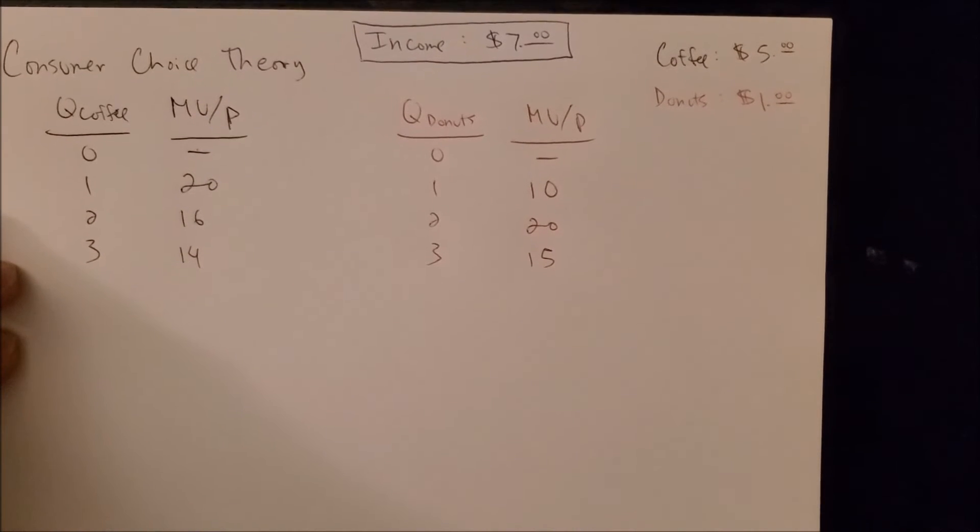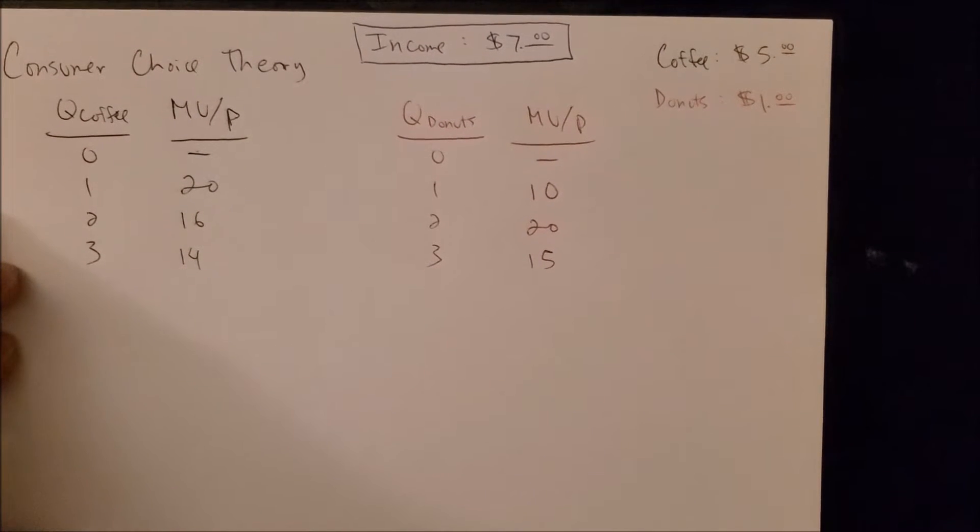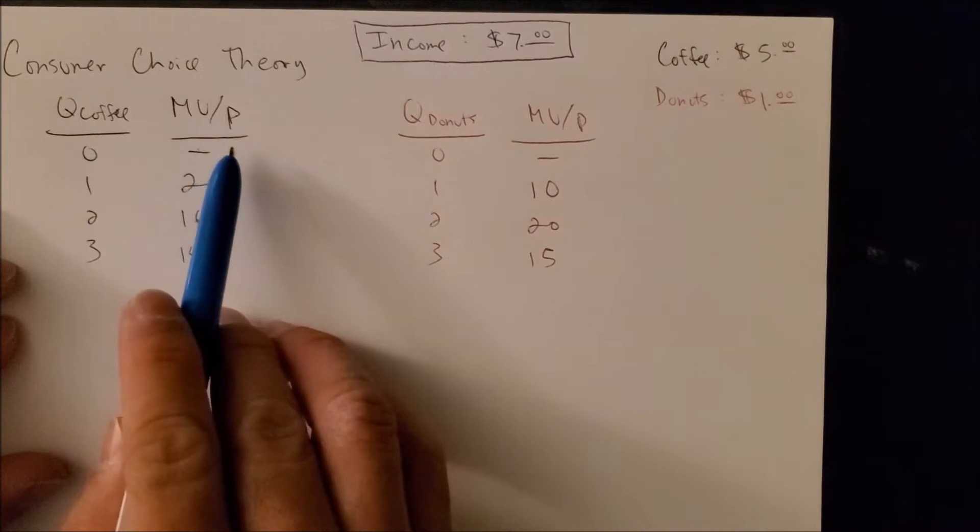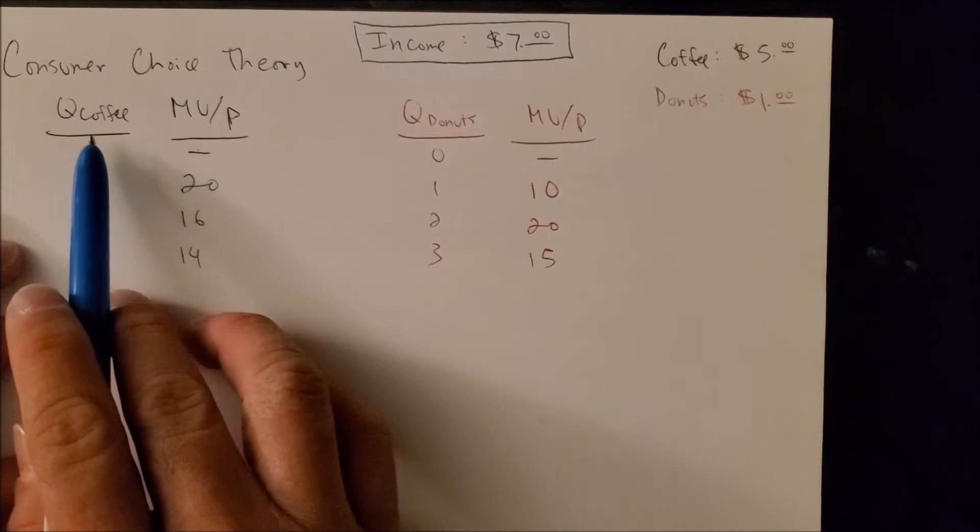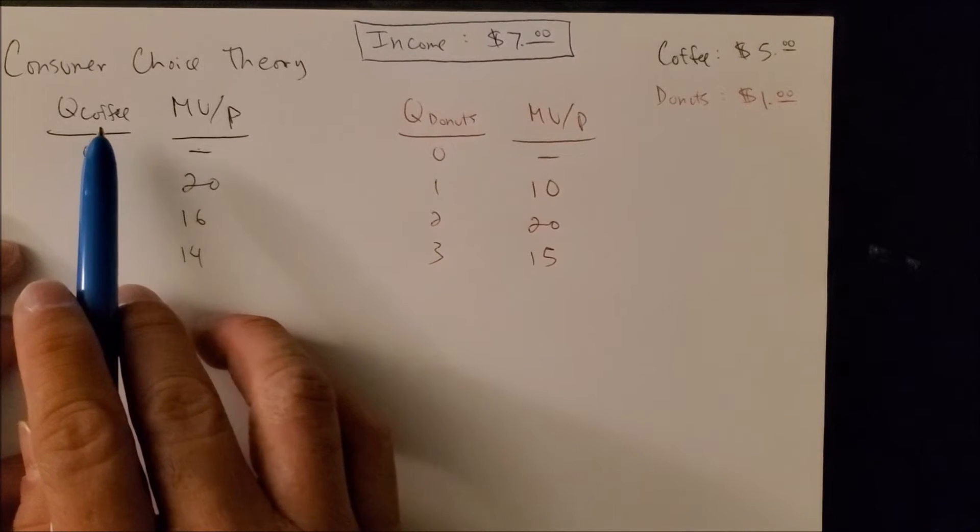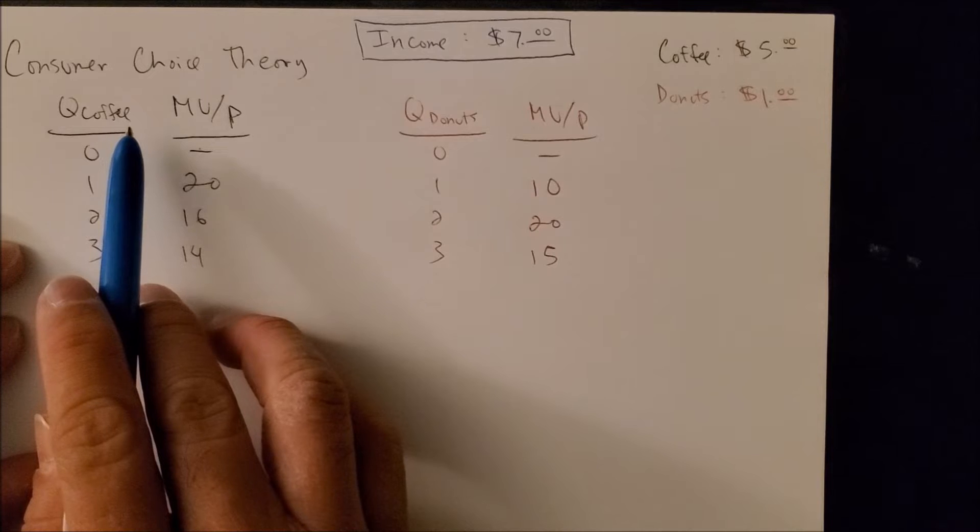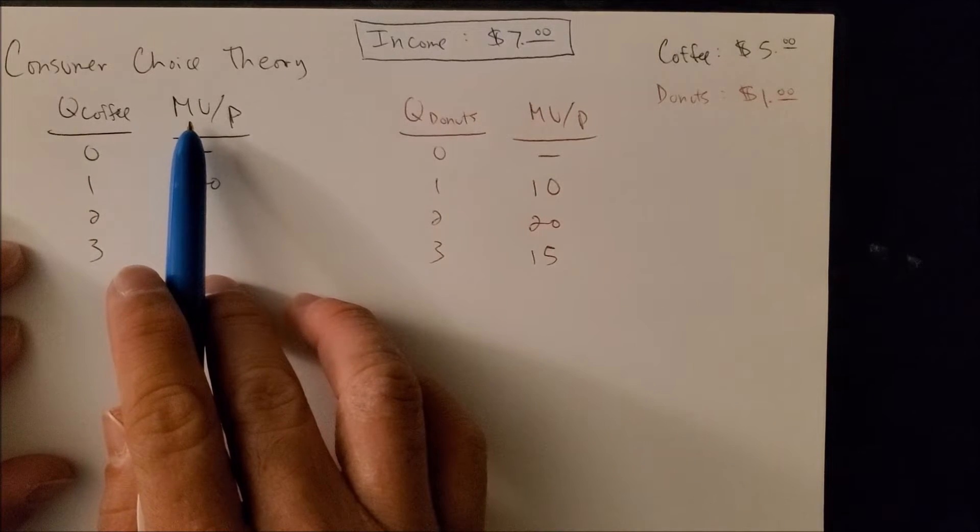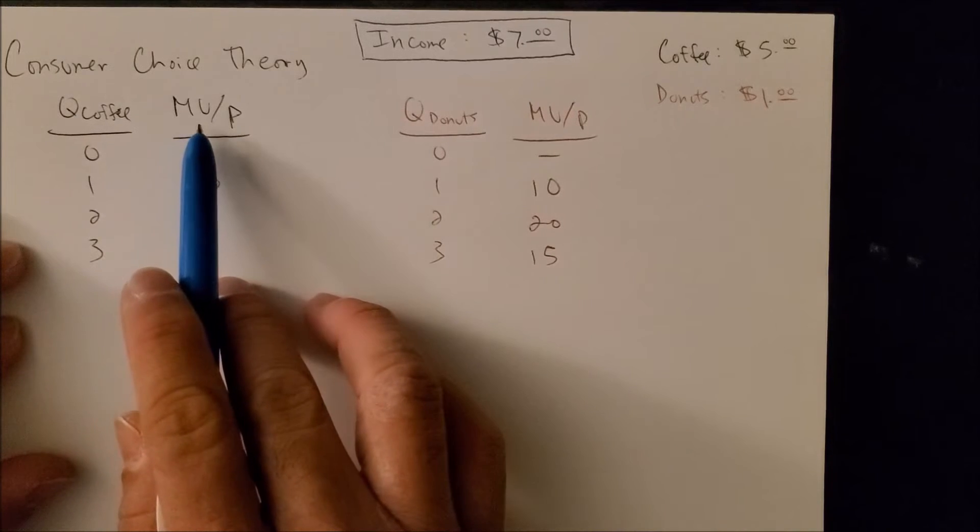Alright folks, part two of consumer choice theory. In the last video we saw how we calculated the marginal utility when we had the quantity of a good—in this case coffee—and the total utility, which are both given. We could then find the MU, the marginal utility, which is one more of something.